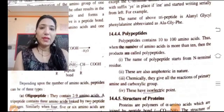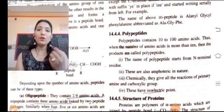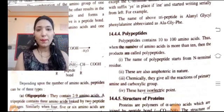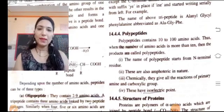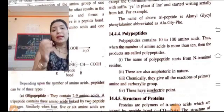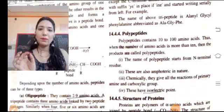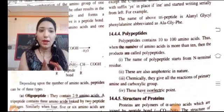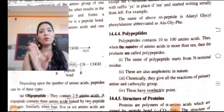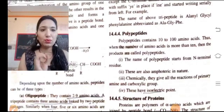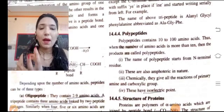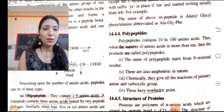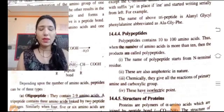The name of polypeptide starts from N-terminal. These are also amphoteric in nature. Amphoteric means something that shows two characters, like amphibians which live on land and in water. So amphoteric means it shows two natures, acidic and basic.